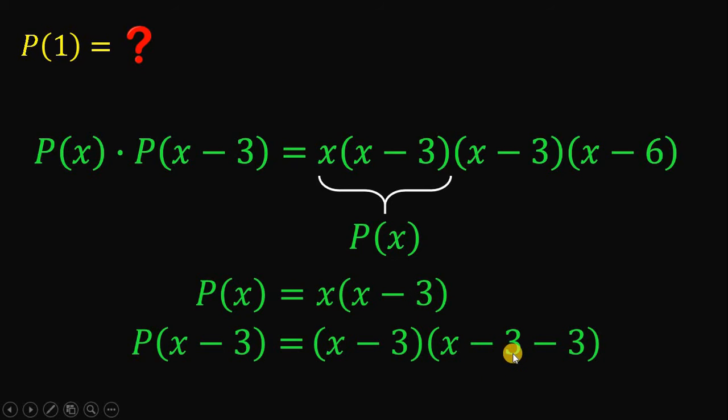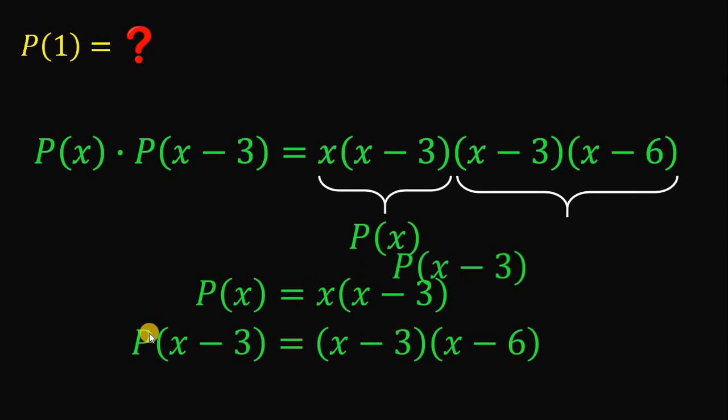Now let's simplify. Negative 3 minus 3 is just negative 6. Surprisingly, this part is definitely our P(x minus 3).